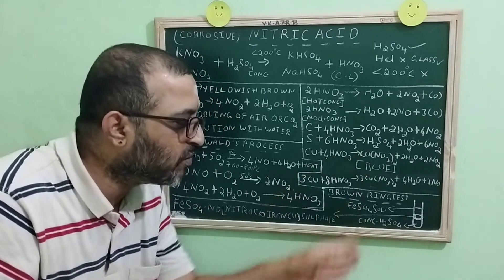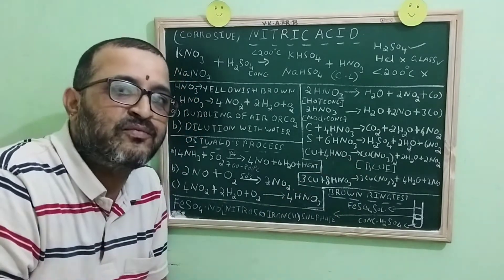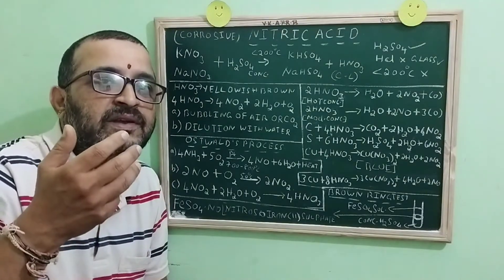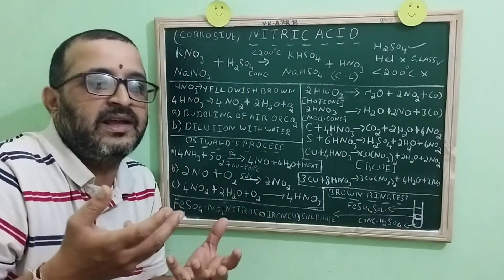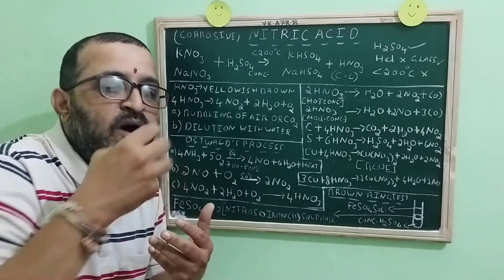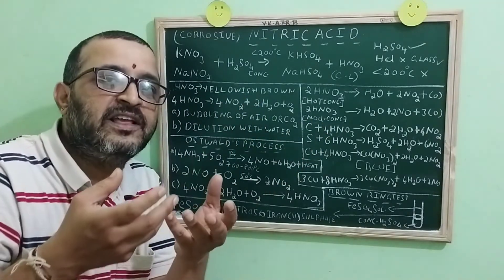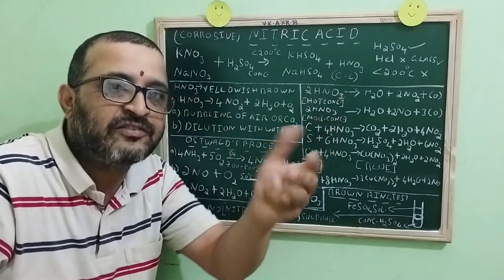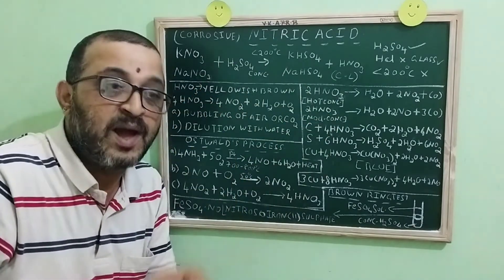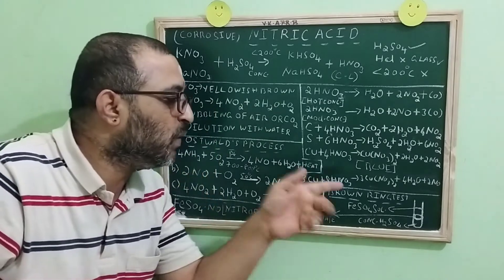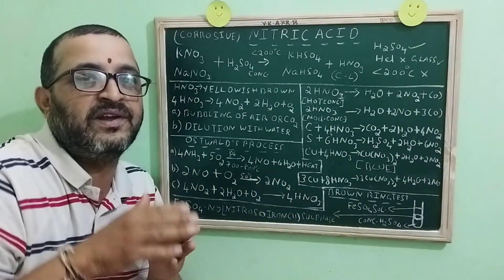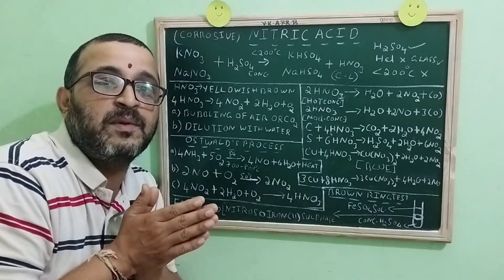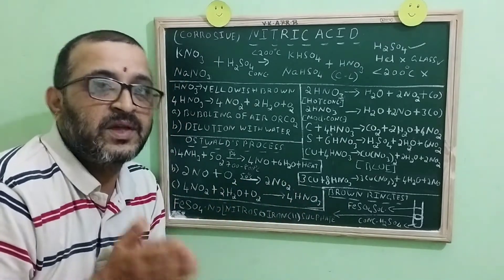Before we proceed with the experimental part, why we want freshly prepared ferrous sulfate? Why can't we use the old one? See, basically, ferrous sulfate, on exposure to the atmosphere, has a tendency to undergo oxidation. It will get oxidized to ferric sulfate. But ferric sulfate will not answer this test. That is why we always take freshly prepared ferrous sulfate.